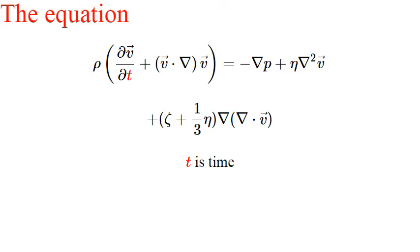T as usual represents time, and p the pressure. Eta is a constant called the dynamic viscosity, and lastly zeta is a constant called the second viscosity.